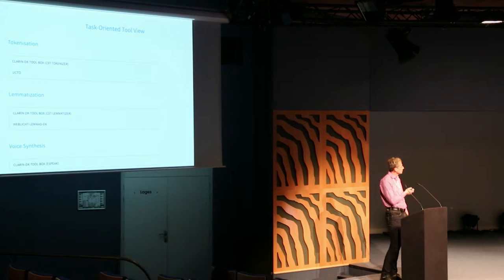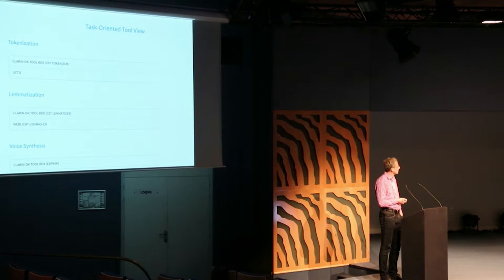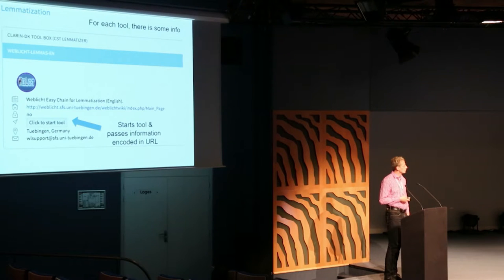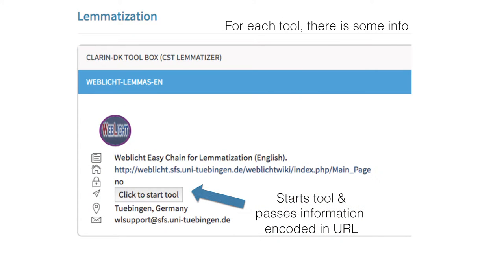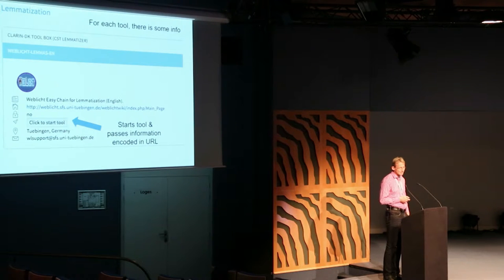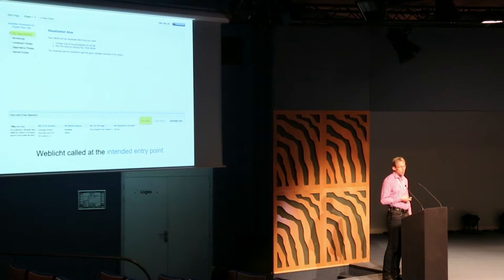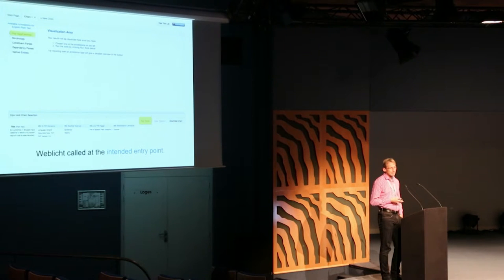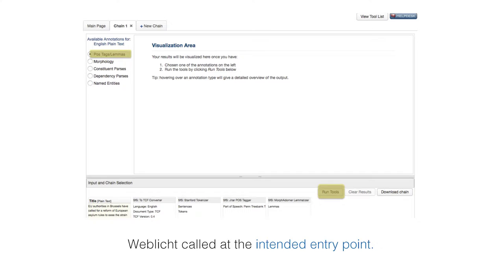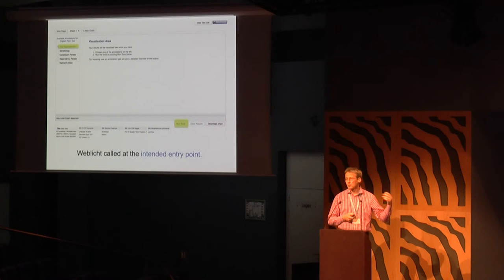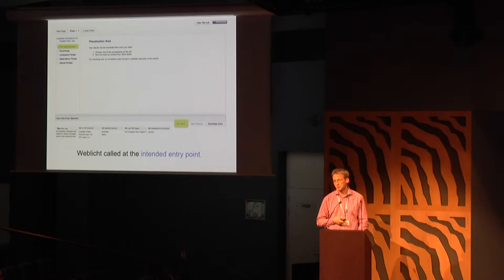If you want to do lemmatization, you click on one of the tools offering that service. When you click on a tool like WebLicht, you get more information: its name, a short description, contact information, and a button to start the tool. You click start tool, and WebLicht opens — not in a standard way, but at the right point: it has already downloaded the resource from the upload server, selected the correct processing chain for tokenization, and all you have to do is press the start button. That works for all the other tools integrated into the switchboard.